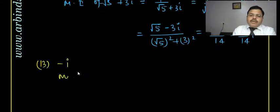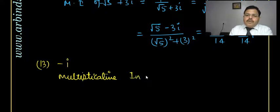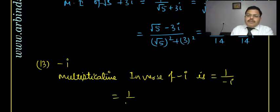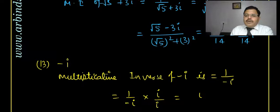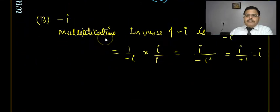Question 13 is minus iota. Multiplicative inverse of minus iota equals 1 upon (minus iota). To simplify, multiply by conjugate plus iota over plus iota. In the numerator it will be iota; in the denominator minus iota times iota is minus iota squared, and iota squared is minus 1, so it becomes plus 1. Therefore, multiplicative inverse of minus iota is iota.